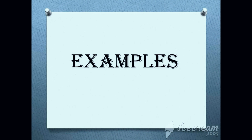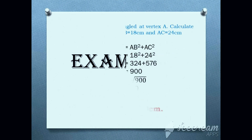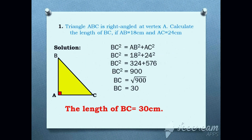Let's see some examples. Here is our question: Triangle ABC is right-angled at vertex A. Calculate the length of BC if AB is equal to 18 cm and AC is equal to 24 cm.